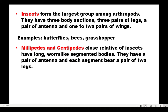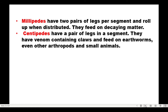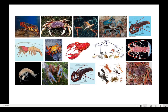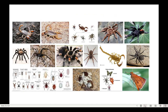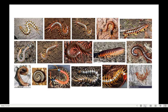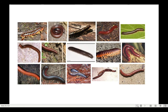Millipedes and centipedes have long, worm-like, segmented bodies with a pair of antennae, and each segment bears pairs of legs. Millipedes have two pairs of legs per segment and roll up when disturbed; they feed on decaying matter. Centipedes have one pair of legs per segment, so millipedes actually have more legs. Centipedes have venom-containing claws and feed on earthworms and even other arthropods and animals.